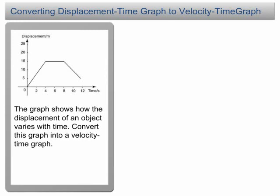To convert a displacement time graph into a velocity time graph, we need to determine the velocity of the motion at all times. In a displacement time graph, the velocity is equal to the gradient of the graph. So, let's find the gradient of the graph.